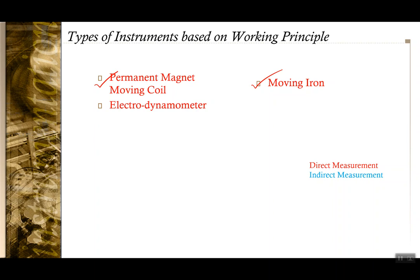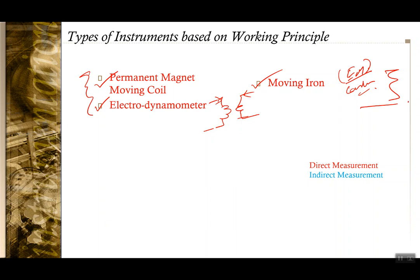Moving iron instruments use the second principle: there is a stationary electromagnet and a conductor moving in its field. The electrodynamometer uses two electromagnets powered by two currents, both supplied by the user with no permanent magnet. These three types of instruments measure current by having a deflection directly related to the current.